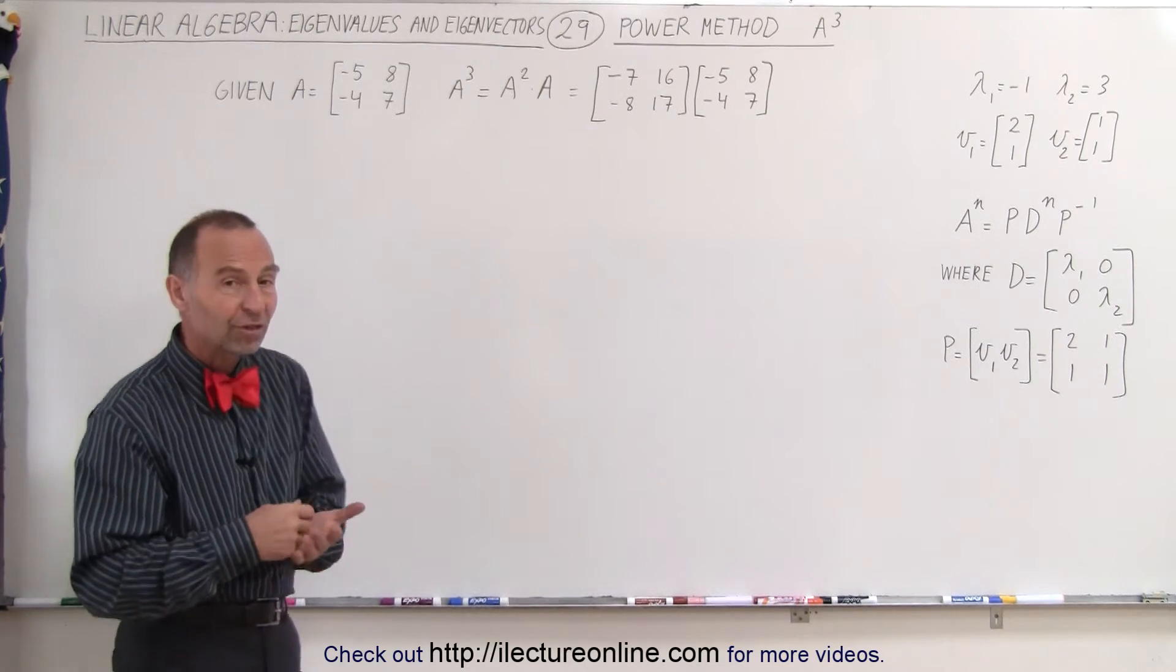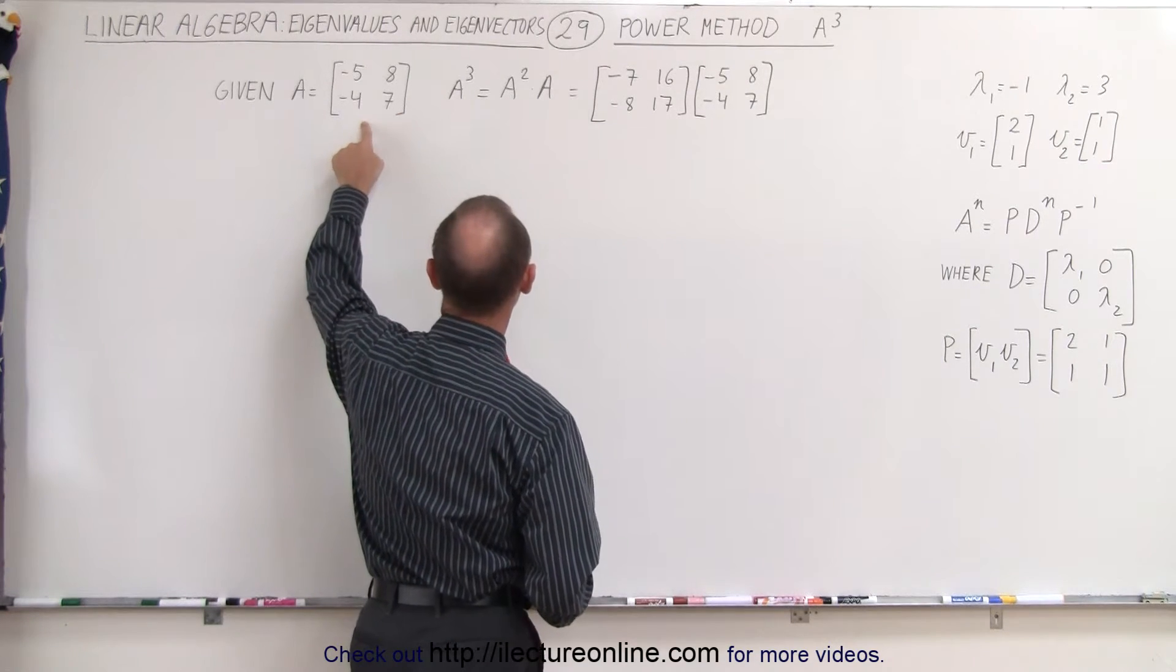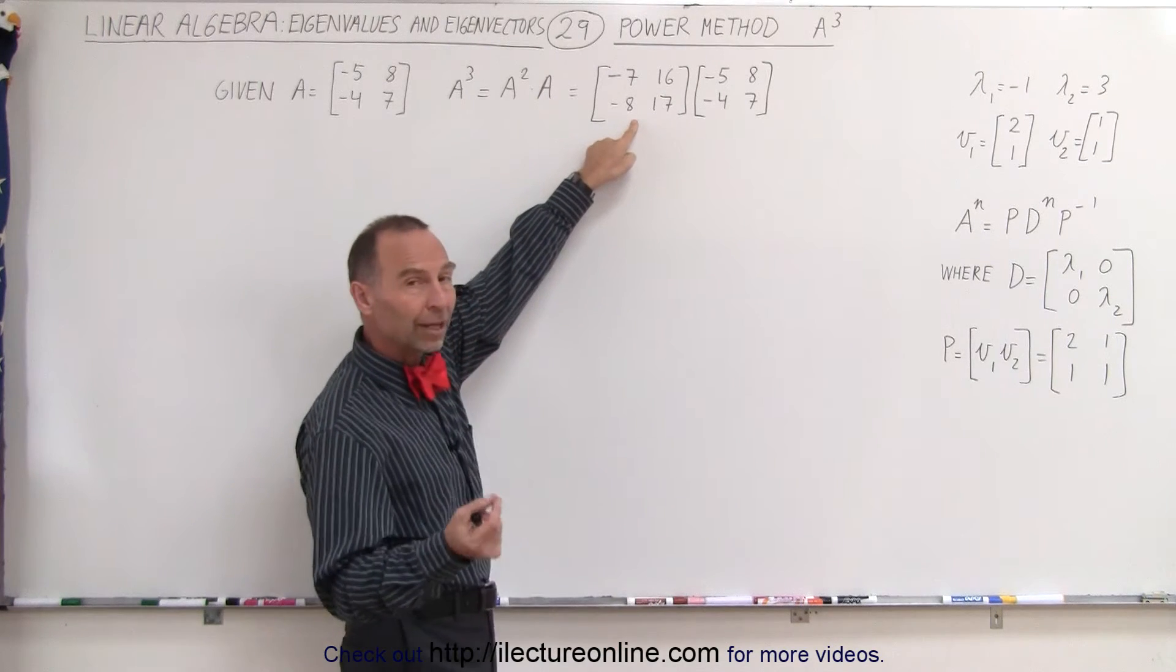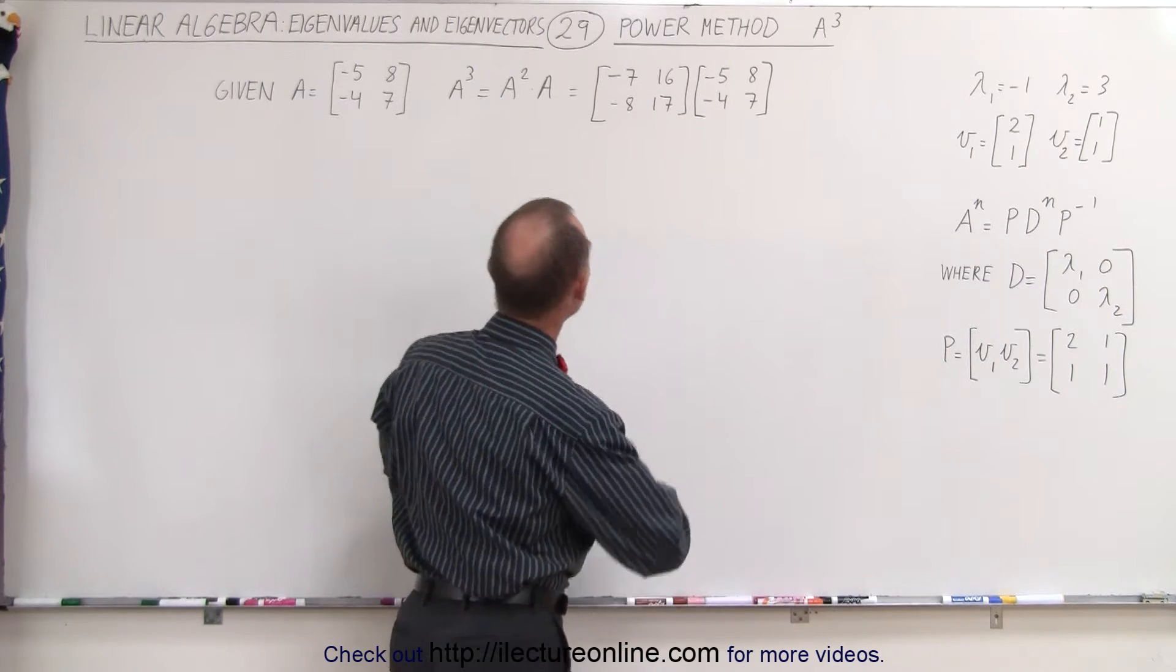Again, if you're going to just simply work it out, you can first get the square of the matrix by multiplying this by itself and then multiplying it by itself again. This is the result that we got from the previous video for A squared. We're going to multiply this times A to find A cubed.